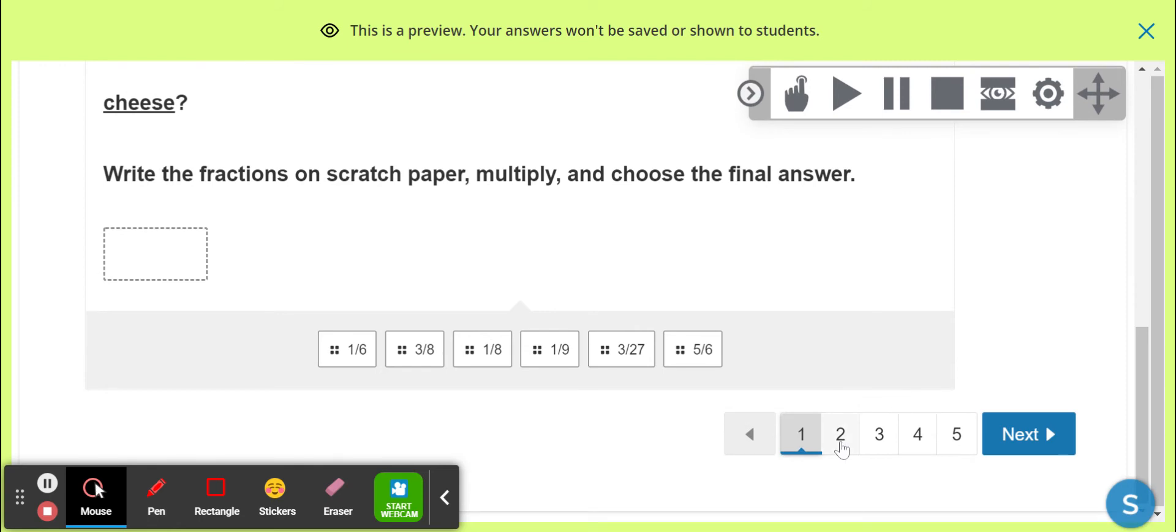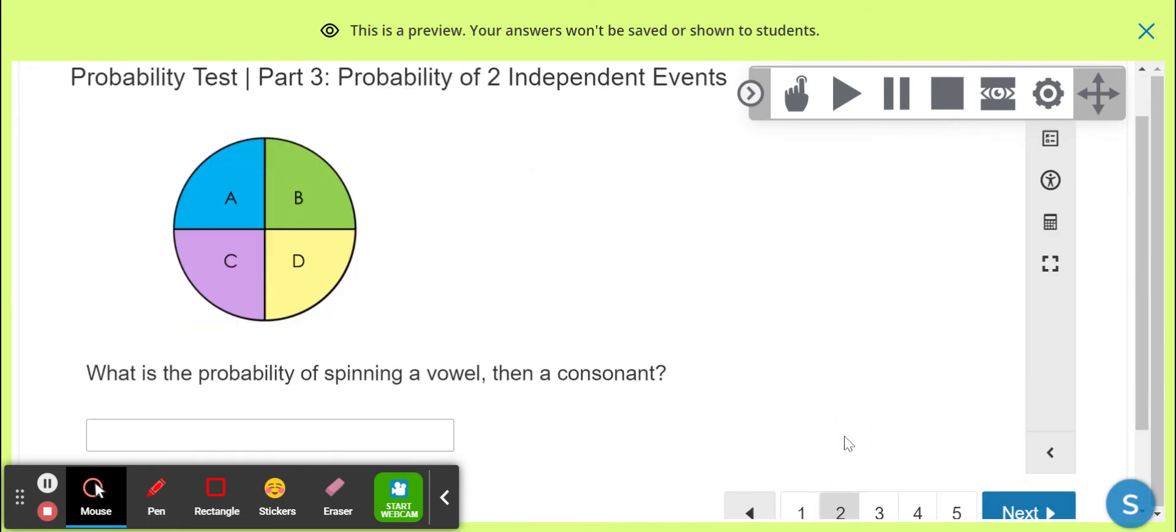And all of you are going to have different questions, but here's a few examples. So this one, the probability of spinning a vowel. A vowel is A, E, I, O, or U. So what fraction of the spinner is a vowel? And then a consonant is the letters that are not a vowel, which would be these ones here. So which fraction of the spinner is a consonant? Multiply those two fractions together.